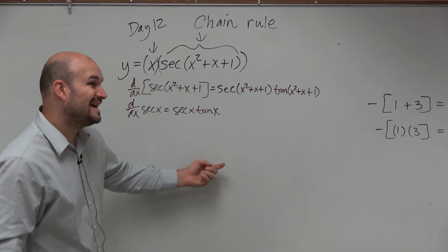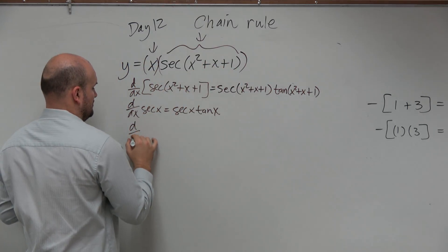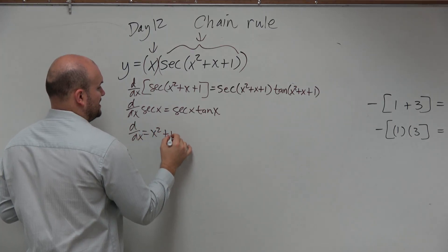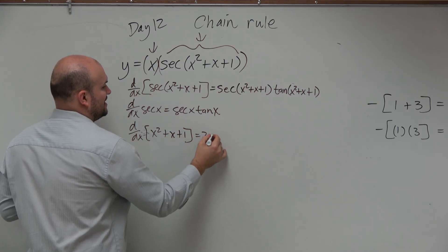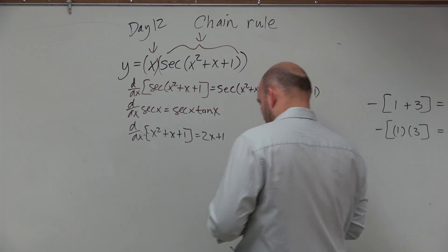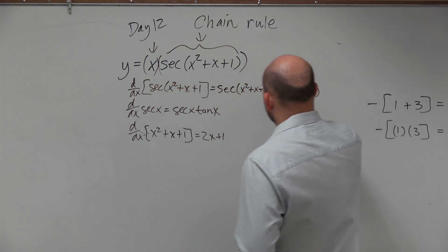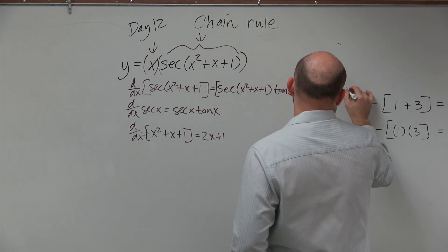and then times the derivative of the inside function, which—let's just have a little fun with that—x² + x + 1 is 2x + 1. So we're going to multiply this again. And if you want to use parentheses, more parentheses, you can. I'm going to use some brackets, times 2x + 1.